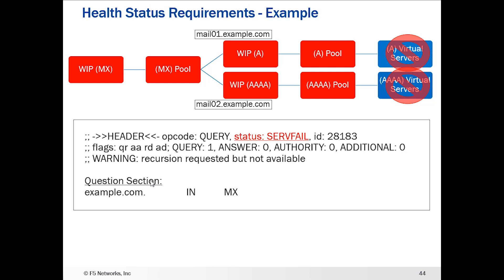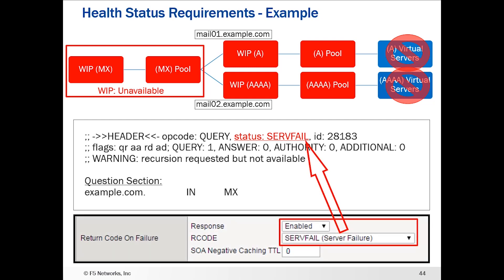Then there's the situation where both pools are down — mail01 and mail02 wide IPs are completely down based on the health checks done at the pool level. In this case, the MX wide IP is going to show up as unavailable, and the status return is SERVFAIL. You have the ability on that wide IP to set the return code on failure. In this example, I've enabled that response and configured it to return a server failure if the wide IP is unavailable — that's why we see SERVFAIL here.